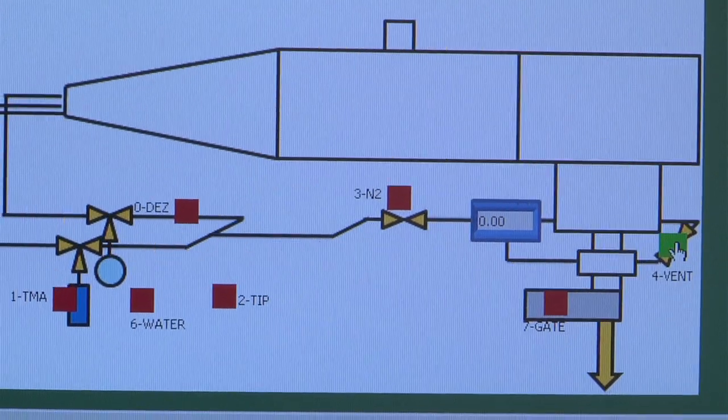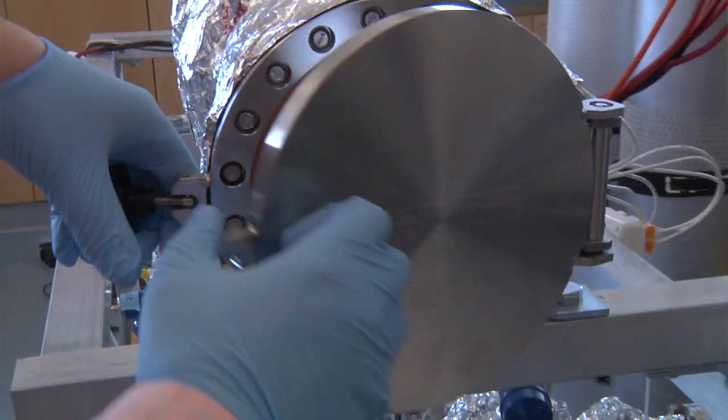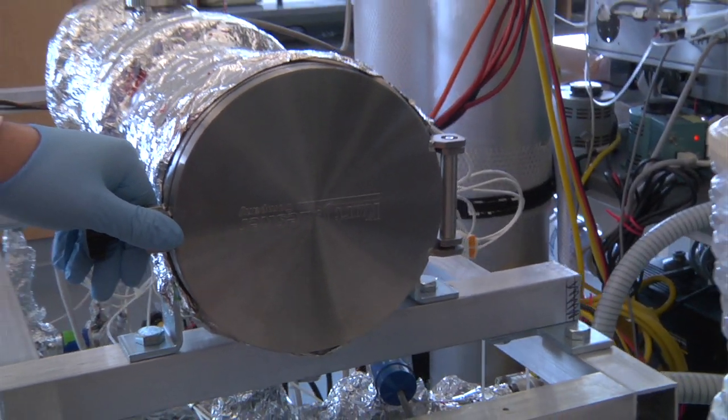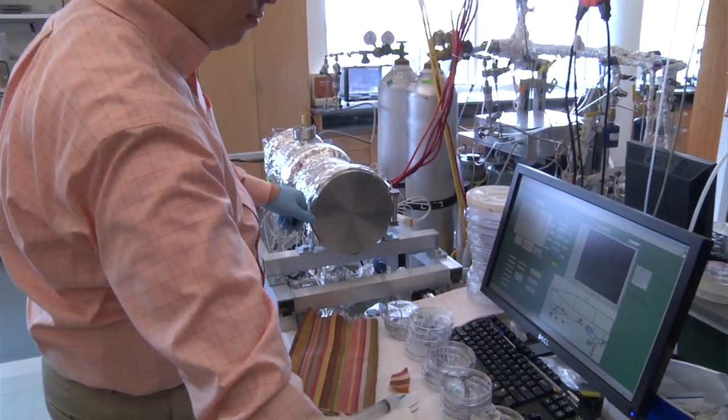We use a vapor phase process to produce nano coatings on textiles. For example, we can produce nano coatings on each individual fiber within the fabric. It's nano scale, very lightweight, and a low-cost method for producing these UV coatings.